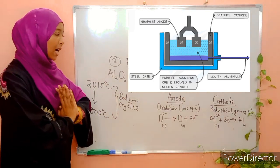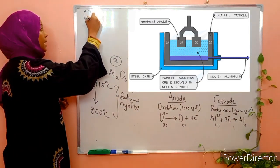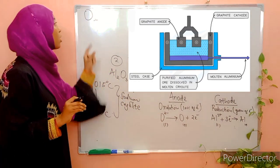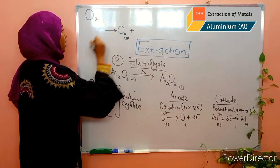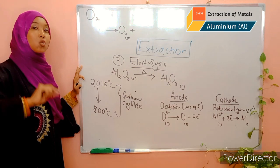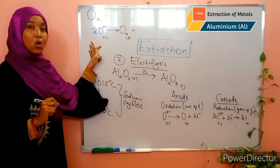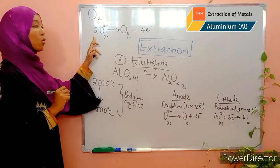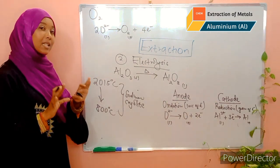Looking at the half-equation for the anode: we know that oxygen is diatomic — it exists as O₂, never as a single atom. So we need to adjust our half-equation to reflect this. If we have a molecule consisting of two atoms of oxygen, then initially we should also have two oxygen ions. These two oxygen ions lose two electrons each, giving a total of four electrons lost. This is our half-equation representing what happens at the anode.